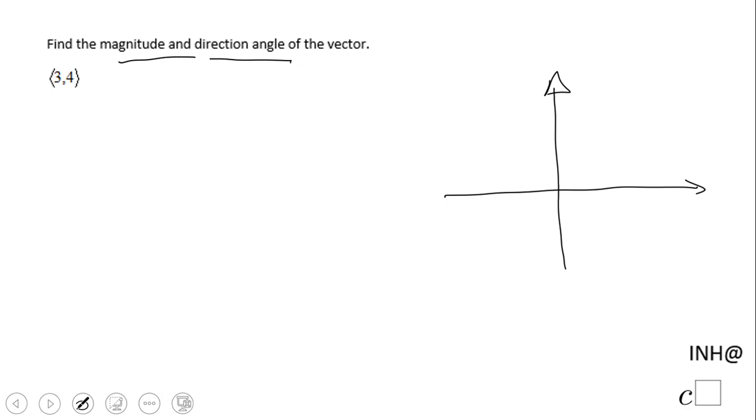So you have the vector (3,4), that means 1, 2, 3 and 1, 2, 3, 4. This vector is in quadrant 1. So how do we find the magnitude of this vector? I'm gonna call it V, or you can call it whatever you want. We're gonna do square root of a squared plus b squared, where a is 3 and b is 4.